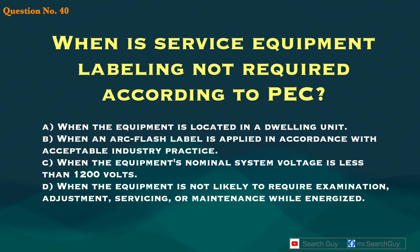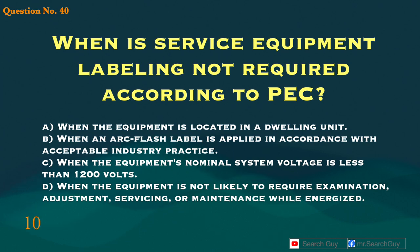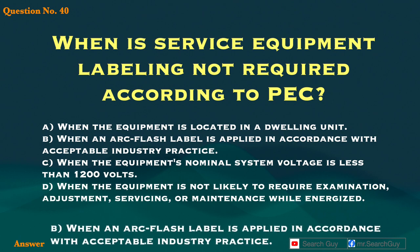Question 40. When is service equipment labeling not required according to PEC? A. When the equipment is located in a dwelling unit. B. When an arc flash label is applied in accordance with acceptable industry practice. C. When the equipment's nominal system voltage is less than 1200 volts. D. When the equipment is not likely to require examination, adjustment, servicing, or maintenance while energized. Answer: B. When an arc flash label is applied in accordance with acceptable industry practice.